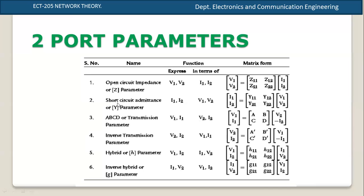The parameters are Z, Y, A, B, C, D, and H parameters. The equation in matrix format is the standard form. V1 and V2 are expressed in terms of I1 and I2. This is the reverse relationship — one is the Z parameter.